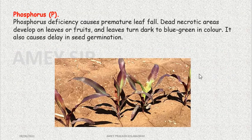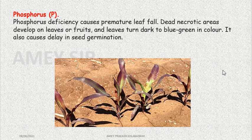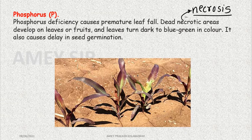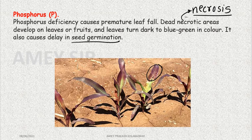Another important element is phosphorus. Phosphorus deficiency causes premature leaf fall. Leaves fall before time. Necrotic areas develop — the main word here is necrosis, which means death of the tissue. Plant tissues will begin to die, and the coloration on the leaf surface changes to bluish-green or purple color. The seed germination process is also delayed.